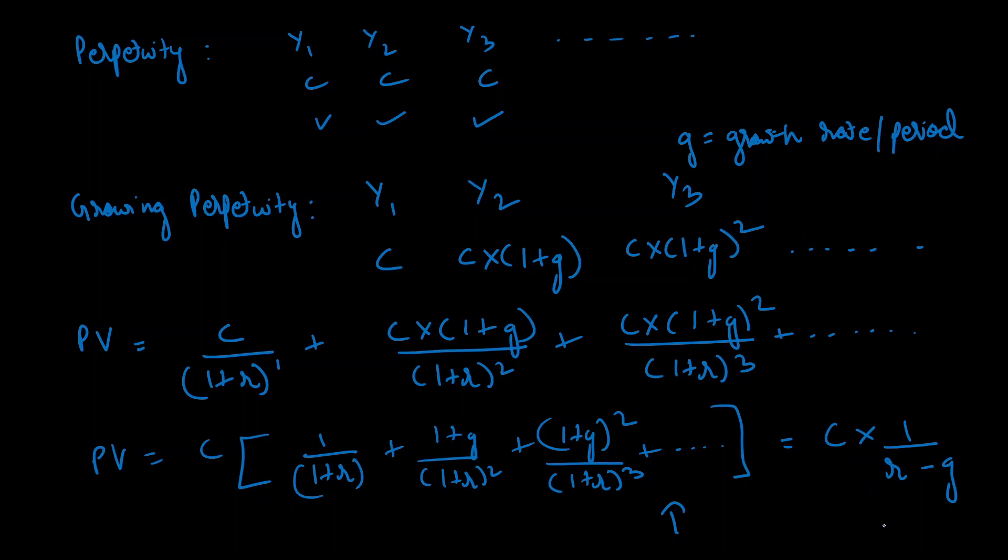Let's write that down separately. The present value for a growing perpetuity is capital C divided by (r - g), where r is the discount rate and g is the growth rate per period.